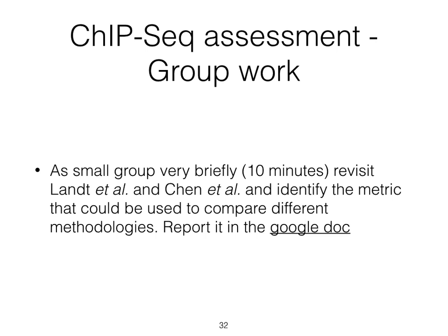That is the aim of the next short group work. Revisit the manuscript by Lund et al. as well as Chen et al. The assessment method is the irreproducible discovery rate — identify the metric that could be used to compare different approaches. Take 10 minutes to do so and report your findings in the Google Doc. Pause the video now, and resume once you have reported the answer.